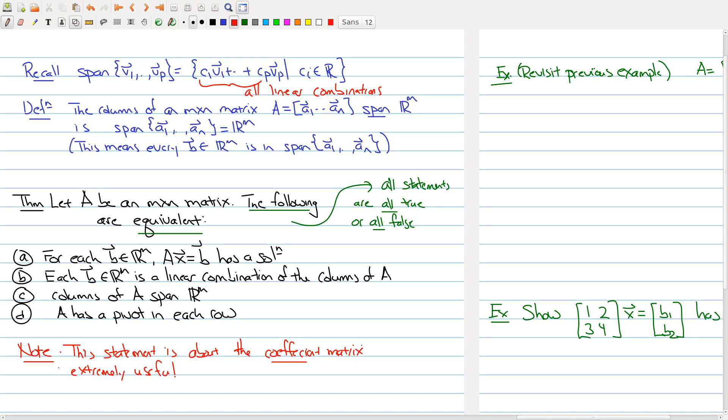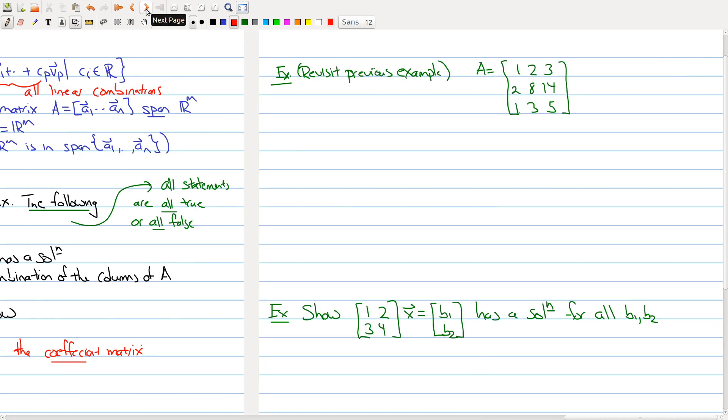So let's go revisit the example that we had done before. This was our example, A equals [1, 2, 3; 2, 8, 14; 1, 3, 5]. And we saw that there are some b for which you cannot solve the equation Ax equals b. But why? Here's another way of seeing that. We can do row reducing.